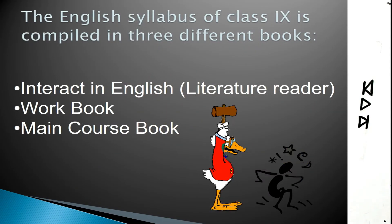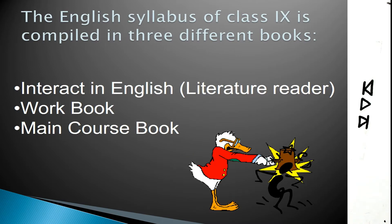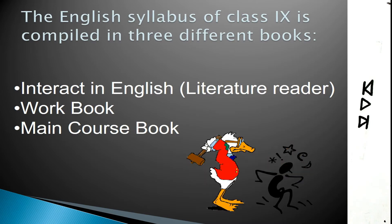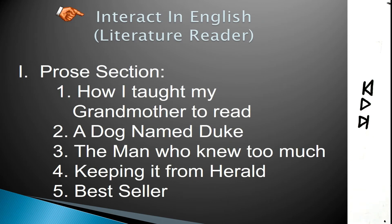The English syllabus of class 9th is compiled in three different books. Interact in English, Literature Reader consists of three sections. The first one is the prose section, which has the following topics: How I Taught My Grandmother to Read, A Dog Named Duke, The Man Who Knew Too Much, Keeping It from Harold, and The Best Seller.